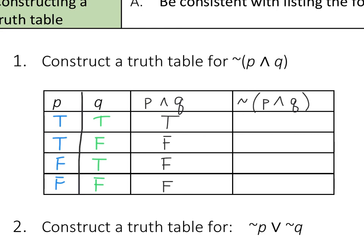Now for the last column, I'm just looking at the P and Q column as a reference — I'm essentially taking the opposite truth value of that column. So if P and Q is true, then not (P and Q) is false. If P and Q is false, then not (P and Q) must be true. And that goes for the rest of them — since the third and fourth rows are both false, not (P and Q) must be true for those as well. So those last two are both going to be true.